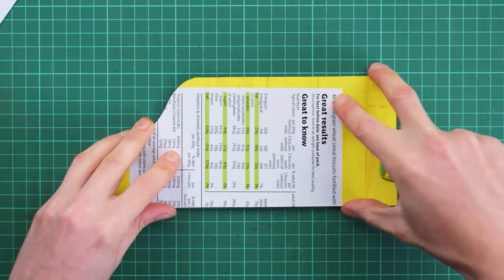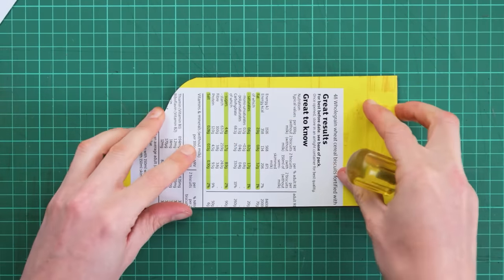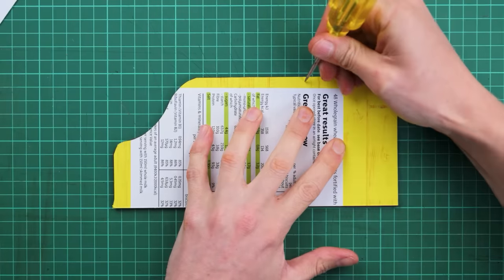And then we can flip over our pattern and pop this onto the flesh side of our card wrap and just transfer the marks over.